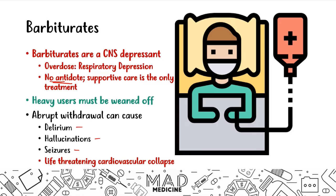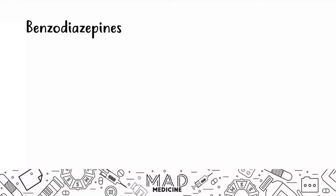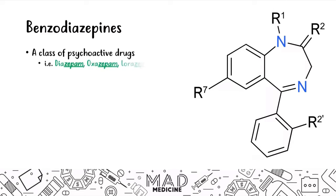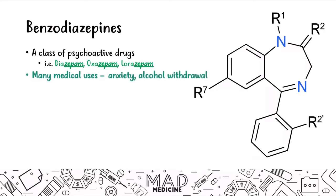The next class of drugs we'll discuss for substance abuse is benzodiazepines. These are a class of psychoactive drugs characterized by their suffix '-zepam.' Examples include lorazepam, oxazepam, and diazepam. Recognizing the '-pam' or '-zepam' suffix is important because if a drug name appears as an answer option, you should know what class it belongs to.